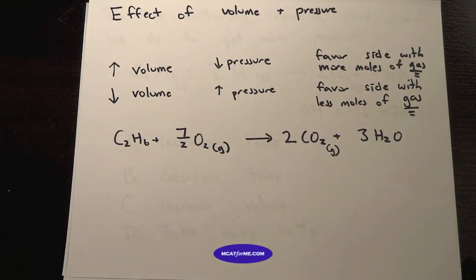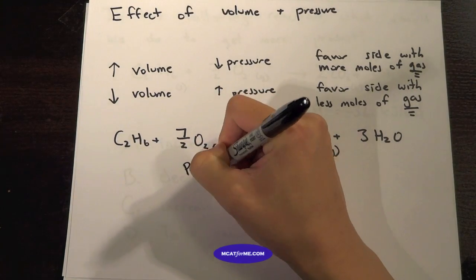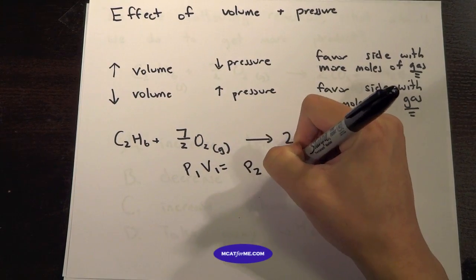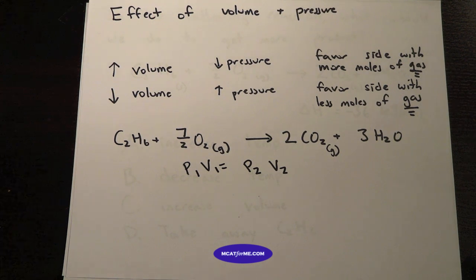And so the final one we're going to look at is the volume and pressure. So when we're increasing volume, we're going to decrease pressure. That's because P1 V1 equals P2 V2. So they're inversely related. So when you increase one, you will decrease the other.